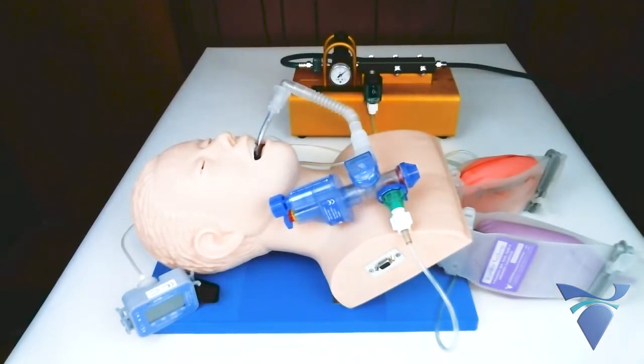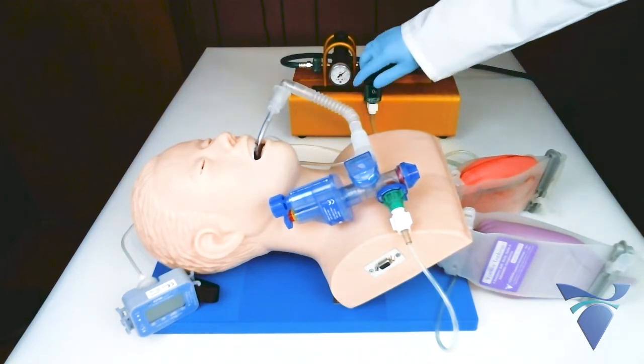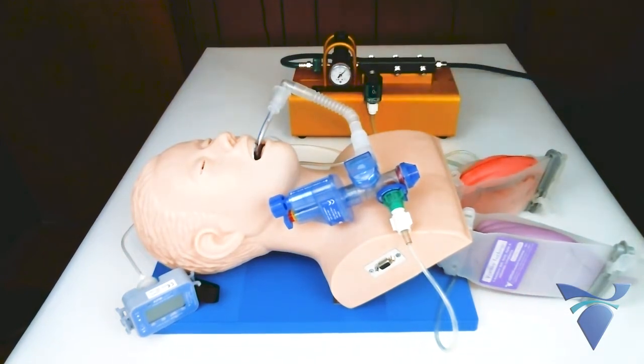During Step 1, the goal is to increase or decrease the flow meter until the desired inspiratory time is achieved. In this demonstration, the flow will be set to 25 liters per minute.